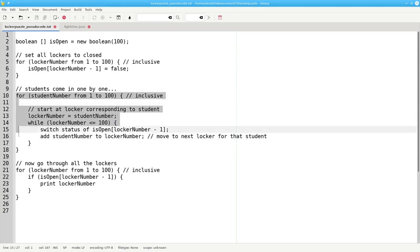Once all the students have done their thing, I can go through all the lockers and see if they're open, and if they are, I'll print the locker number. There's the pseudocode.